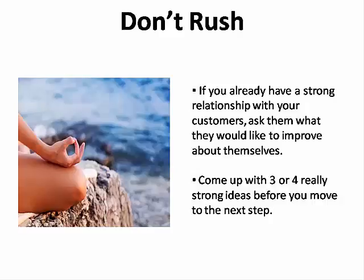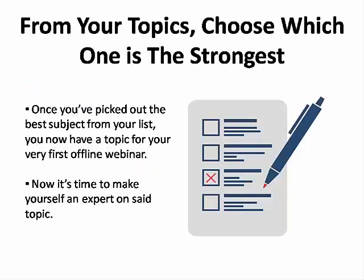Come up with three or four really strong ideas before moving on to the next step. Once you have identified a few great topics for your offline webinar, figure out which one is the strongest — which one stands head and shoulders above the others. Congratulations! You now have the topic for your very first offline webinar.